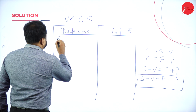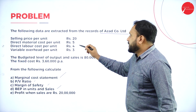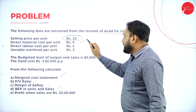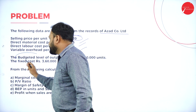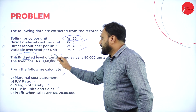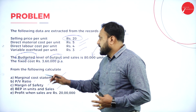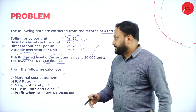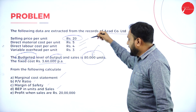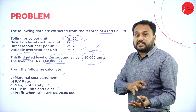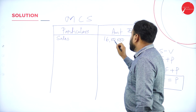The first line is Sales. From the question, the selling price per unit is ₹20, direct material is ₹5, direct labour is ₹4, variable overhead is ₹3. The budgeted level of output and sales is 80,000 units, and fixed cost is ₹3,60,000 per annum. So Sales = 20 × 80,000 = ₹16,00,000 (16 lakhs).